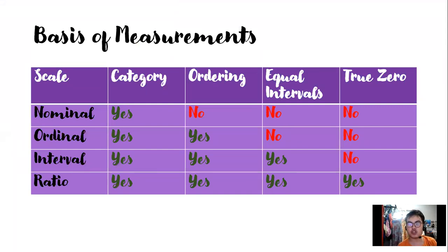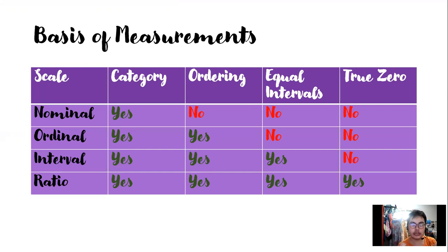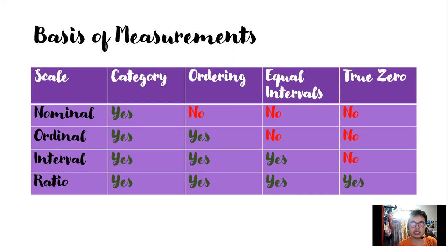Now we can see why ratio is the highest level of measurement. It has category, ordering, equal intervals, and a true zero. For example, temperature: if it is zero, it is cold. It has equal intervals because we can compare cold temperature to hot temperature. We can order from highest to lowest temperatures. We can classify it as Fahrenheit, Celsius, or Kelvin. For interval, the only thing it doesn't have is the true zero. For ordinal, it doesn't have equal intervals or true zero — that's why it falls into discrete, with only category and ordering. Nominal is the lowest level because it only has categories.